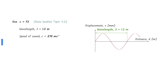The wavelength of a wave can be found from the displacement-distance graph. The wavelength is found to be 1.5 meters, and the speed of sound is given as 270 meters per second. Use the equation for speed of a wave given in the data booklet. Rearrange for frequency and put in the values to find your answer.